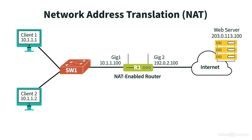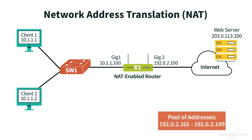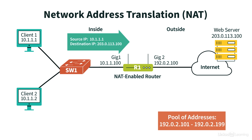Let's take a look at an example. In this instance, we're fortunate enough to have a pool of publicly routable addresses that we can use in the range of 192.0.2.101 all the way through 192.0.2.199. Those addresses can be used as we send traffic out to the internet. To understand NAT's terminology, we need to identify which portion refers to the inside of the network and which portion refers to the outside. Everything off of interface Gig1 on Router R1 is the inside, while everything off of Gig2 is the outside. Now let's imagine that Client1 wants to communicate with a web server on the internet that has an IP address of 203.0.113.100.